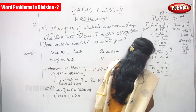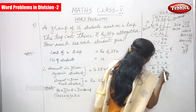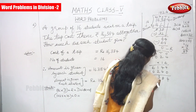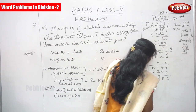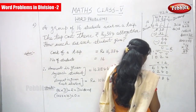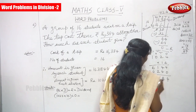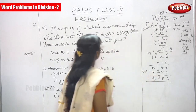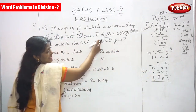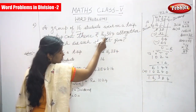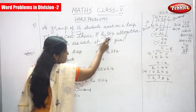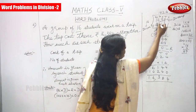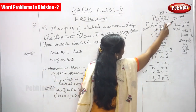Now add both numbers: 4 plus 0 is 4; 4 plus 4 is 8; 2 plus 1 is 3; 6 plus 0 is 6; and 1. That gives 16,384. So you get the same dividend — 16,384 — which is what was given in the question.